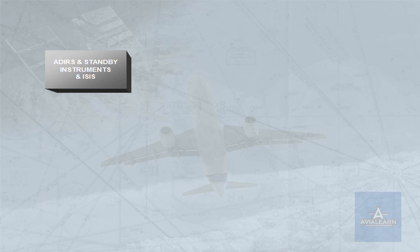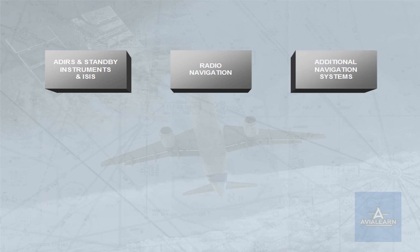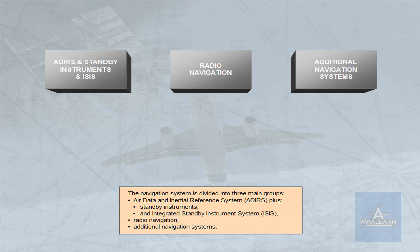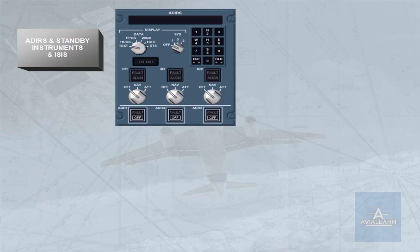The navigation system is divided into three main groups: air data and inertial reference system (ADIRS), plus standby instruments and integrated standby instrument system (ISIS); radio navigation; and additional navigation systems. There are several subsystems within each group.